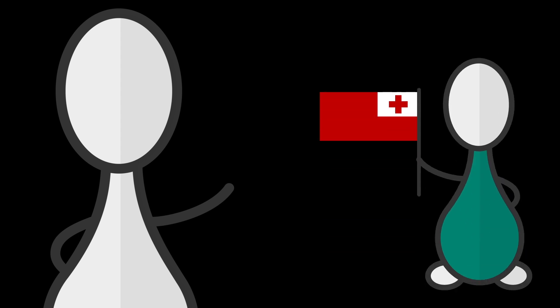Of course, your number words needn't be overly mathy. Like Tongan, for example — it just lists numbers as if they were phone numbers: 1, 1, 0, 6, 9, 1, 7, 2, 9. Simple.